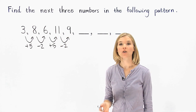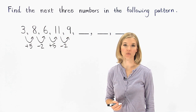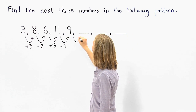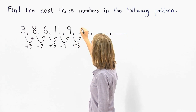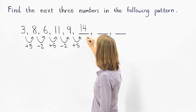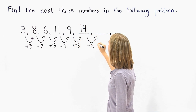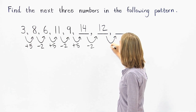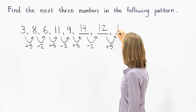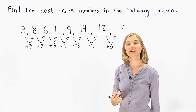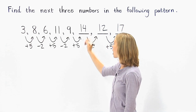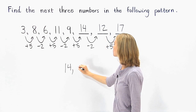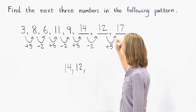So the pattern is adding 5, followed by subtracting 2. Continuing with this pattern, 9 plus 5 is 14. 14 minus 2 is 12, and 12 plus 5 is 17. So the next three numbers in the pattern are 14, 12, and 17.